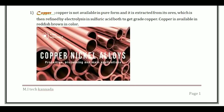Copper is not available in pure form and it is extracted from the ore which is then refined by electrolysis in sulfuric acid to get high-grade copper. Copper is reddish brown in color.